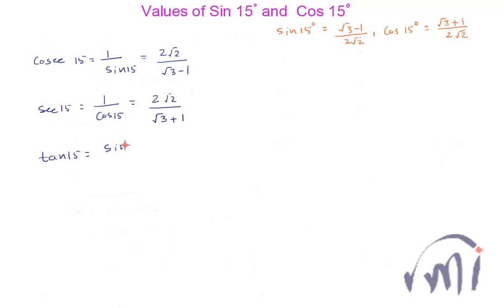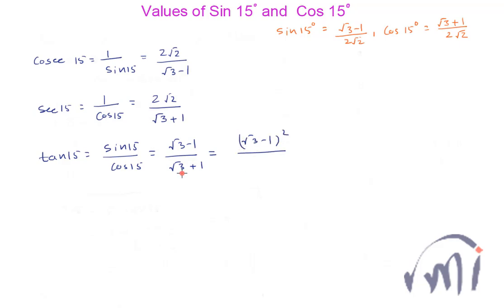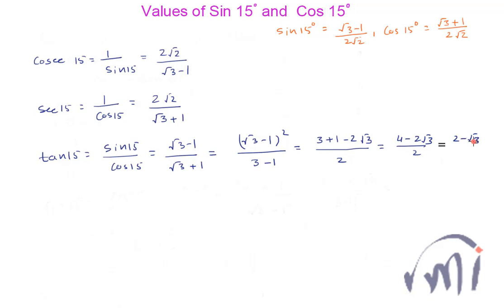Tan 15 equals sin 15 divided by cos 15, which equals (√3 minus 1) divided by (√3 plus 1). Multiplying both numerator and denominator by (√3 minus 1), we get (√3 minus 1)² divided by (√3 plus 1)(√3 minus 1), which equals (3 plus 1 minus 2√3) divided by (3 minus 1), giving (4 minus 2√3)/2, so tan 15 equals 2 minus √3.